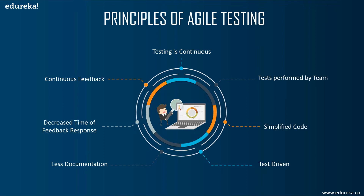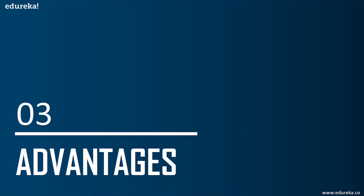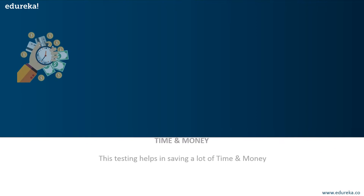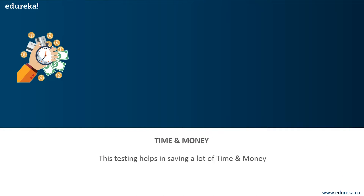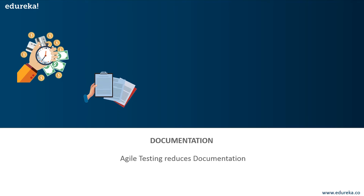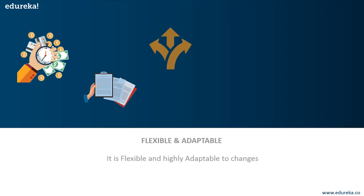Those were the principles of agile testing. Now let's look at the advantages. First, it saves time and money — with agile testing you identify problems in earlier stages, saving both time and money. Next, documentation is reduced significantly. Third, agile testing is flexible and highly adaptable to changes, so you won't face trouble if changes need to be made to the software during the process.